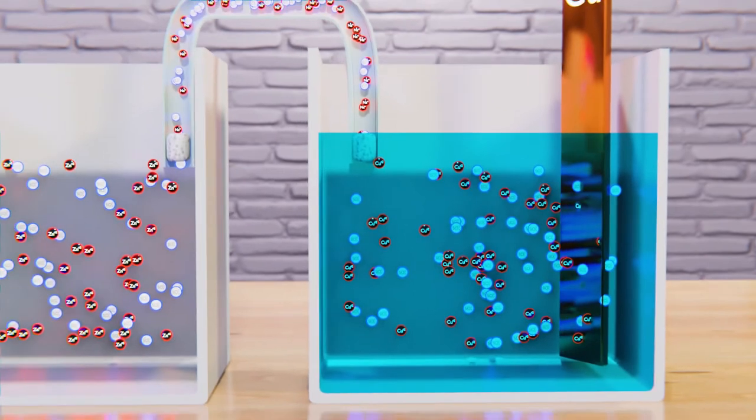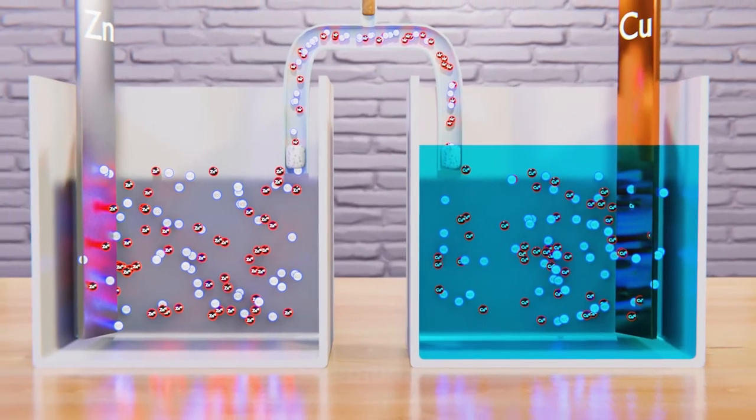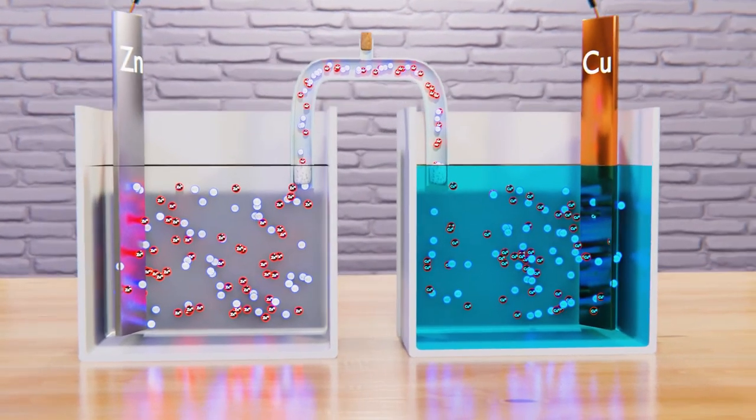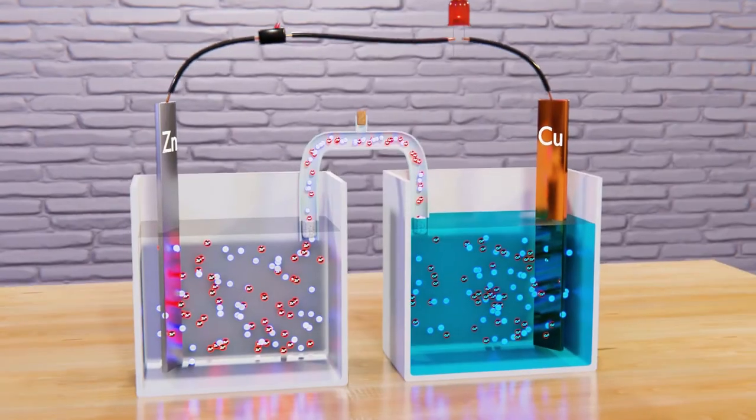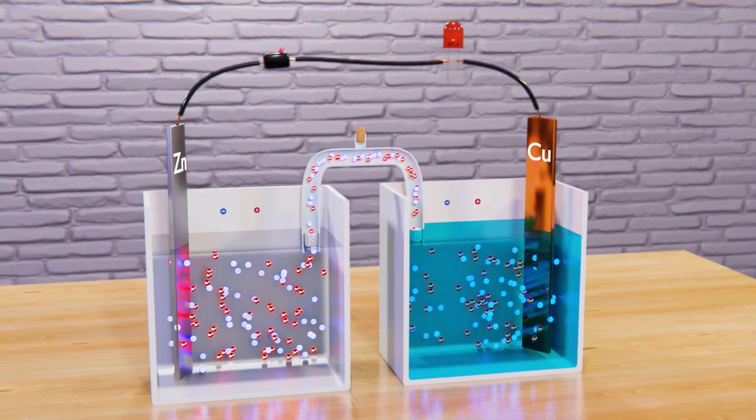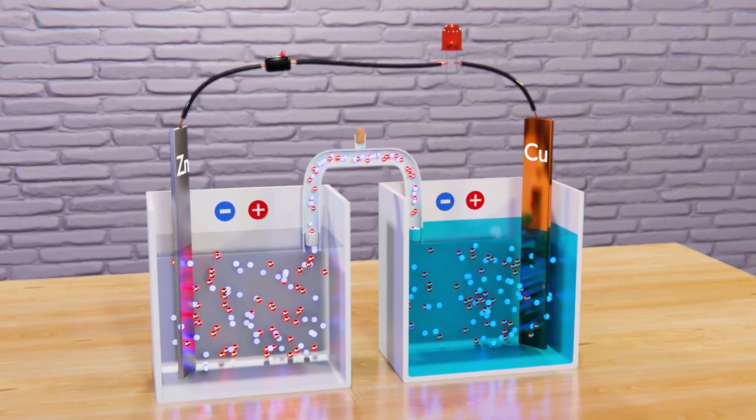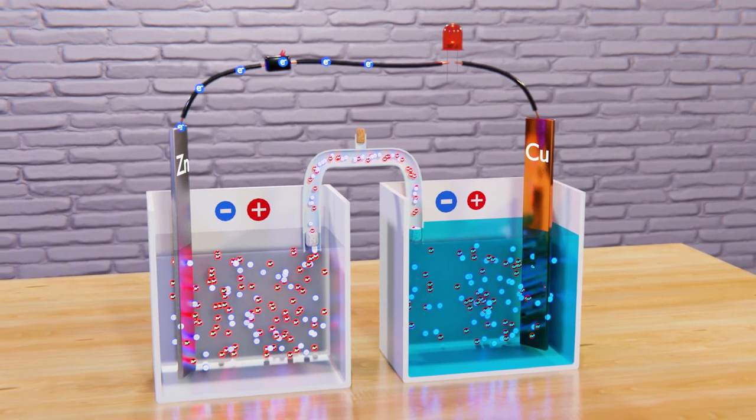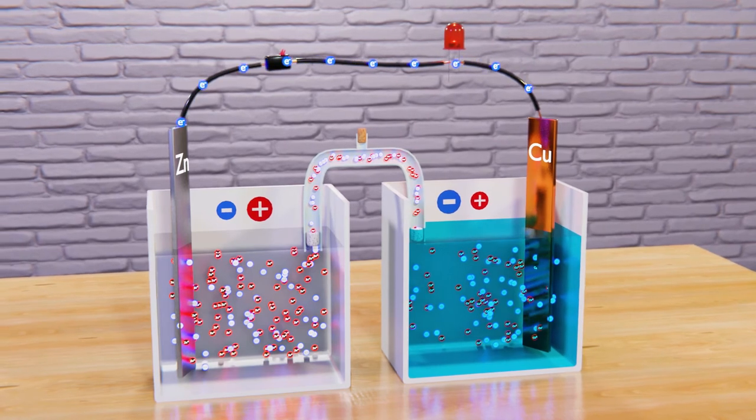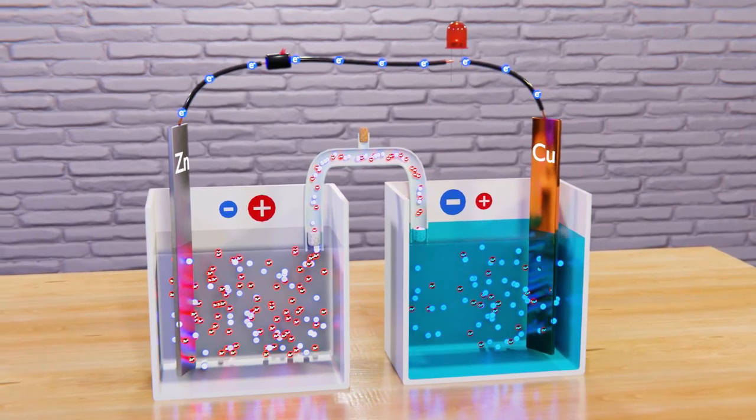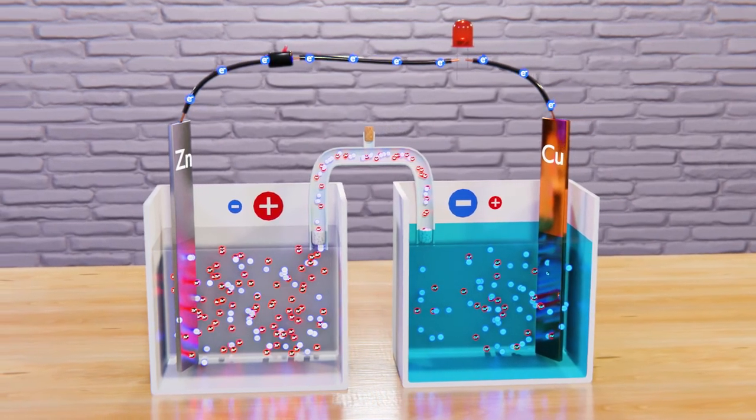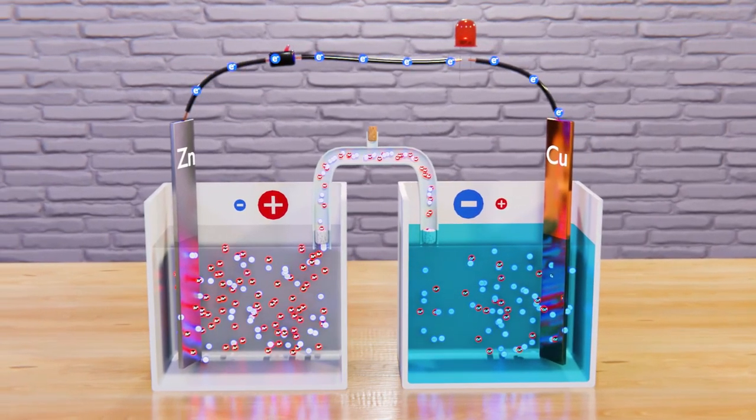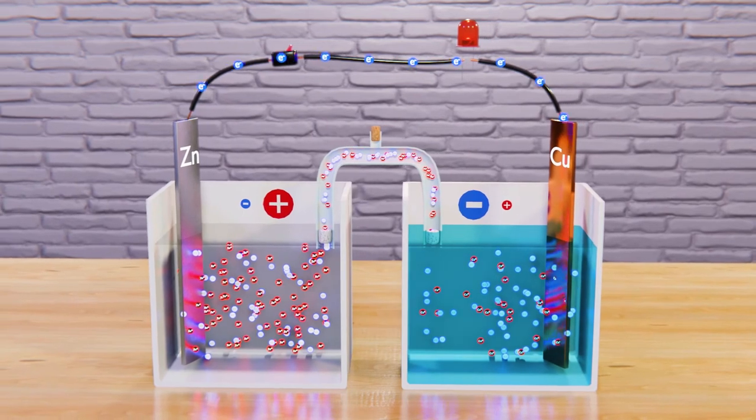In this way, since there is a material that is being reduced and another that is oxidizing simultaneously, these reactions are known in abbreviated form as redox reaction. Although if we had only these two processes happening, we would encounter a problem, and is that as zinc is being oxidized and copper is reducing, an imbalance of the charges begins to be generated in the containers.